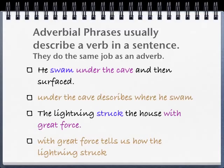Adverbial phrases usually describe a verb in a sentence. They do the same job as an adverb. For example: 'He swam under the cave and then surfaced.' Under the cave is the adverbial phrase, and it describes where he swam — swam is the verb. Another example: 'The lightning struck the house with great force.' With great force is the adverbial phrase, and it tells us how the lightning struck. Struck is the verb.